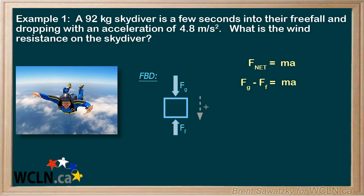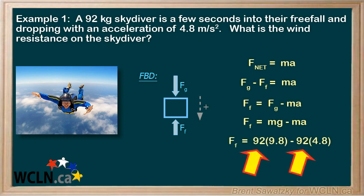Now, we're looking for the force of friction, so let's rearrange the formula for Ff, just moving terms around. And we can replace our Fg with Mg, we're near enough to the surface of the earth, and we plug in our numbers. M equals 92 kilograms, G equals 9.8 meters per second squared, down as positive.